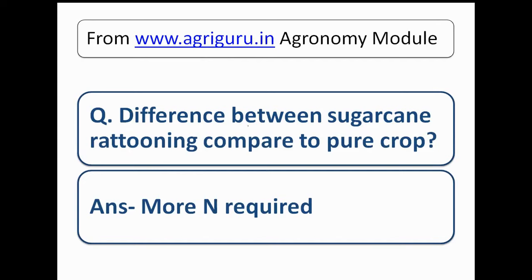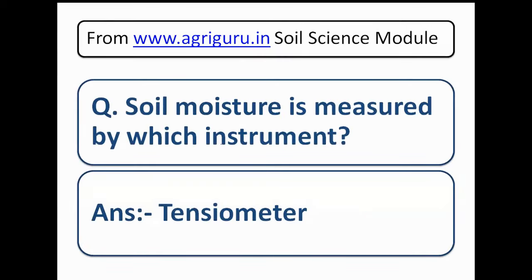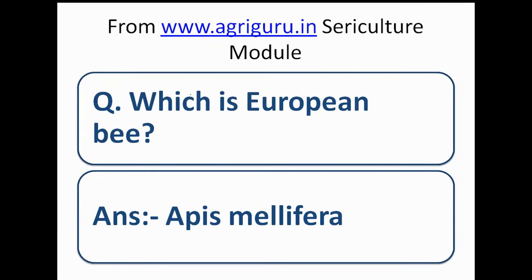The next question is about the difference in sugarcane ratooning compared to a pure crop — the answer is that more nitrogen will be required. Question number 36 from the agronomy module: the Maltboard instrument is used for plowing. Question number 37 from the soil science module: soil moisture is measured by which instrument? The answer is the tensiometer.